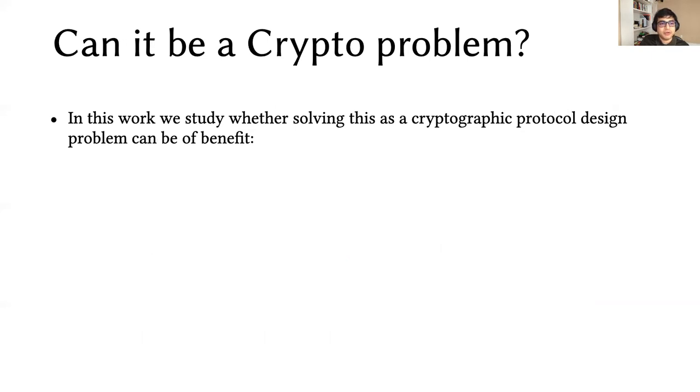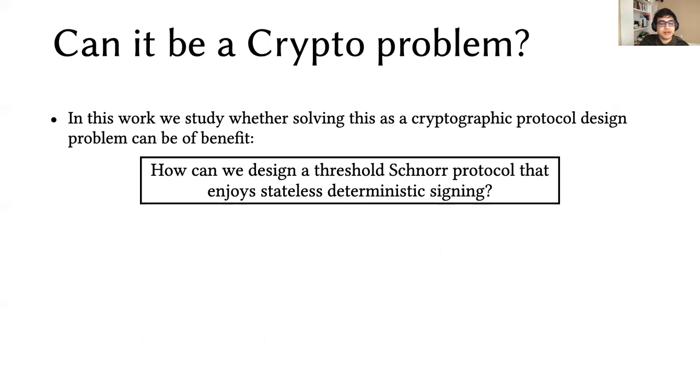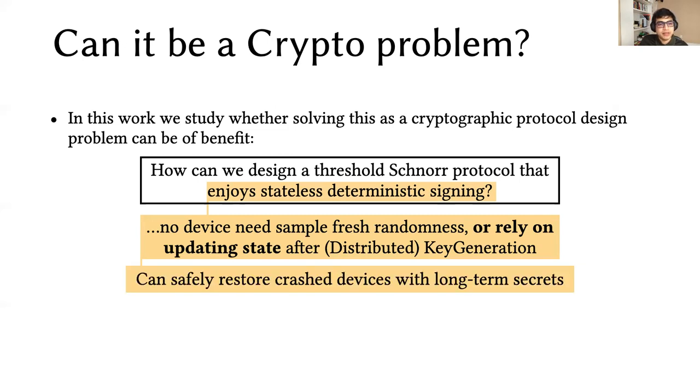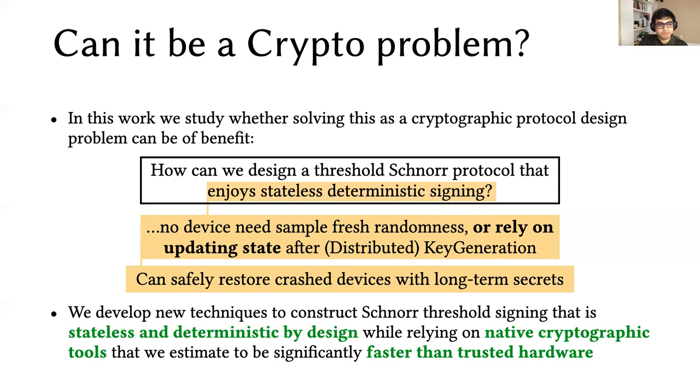In this work, we study whether solving this at the cryptographic protocol design level could be useful. So we asked the question, how can we design a threshold Schnorr protocol that enjoys stateless deterministic signing? That is, we want no party to have to sample fresh randomness or rely on updating state after key generation. The idea is that we should be able to safely restore crashed devices with long-term secrets, which is significantly easier to maintain. We developed new techniques to construct Schnorr threshold signing that's stateless and deterministic by design, while using native cryptographic tools such as block ciphers, and we estimate the efficiency to be significantly faster than trusted hardware.